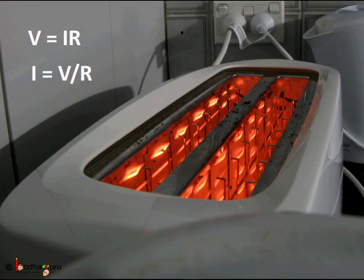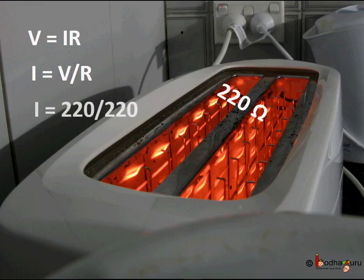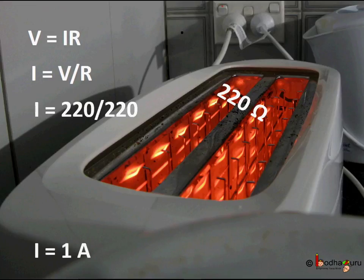Say resistance of a heater coil is 220 ohms. How much will it draw from the socket assuming 220 volts? We will use Ohm's law again. Voltage is 220 volts, resistance R is 220 ohms. So I equal to V by R which is equal to 220 by 220 which is equal to 1 amp.